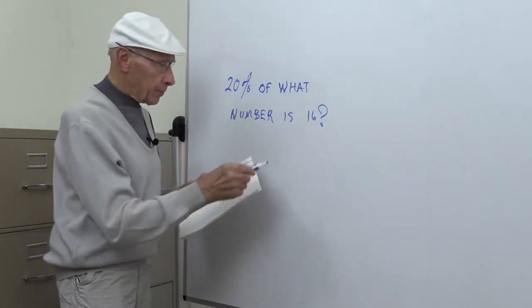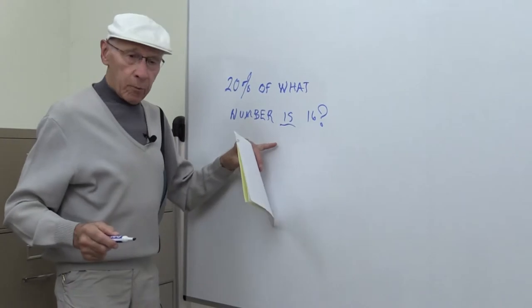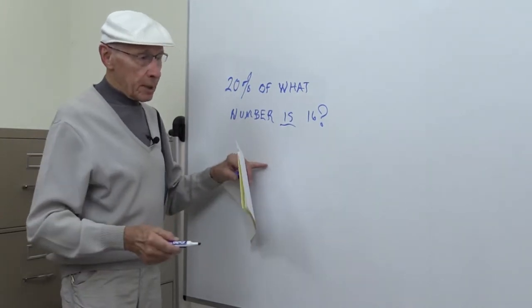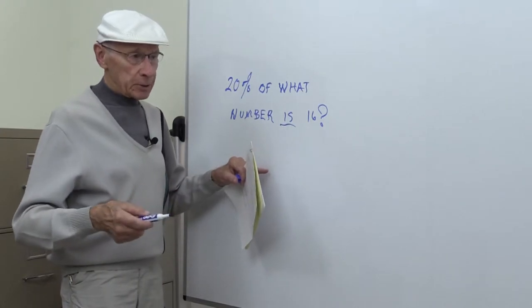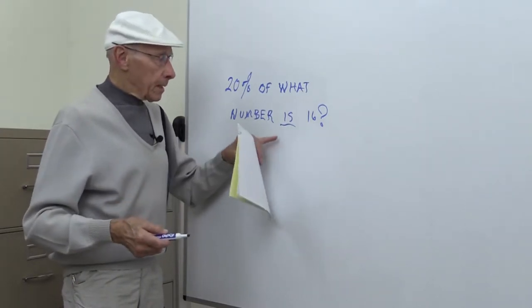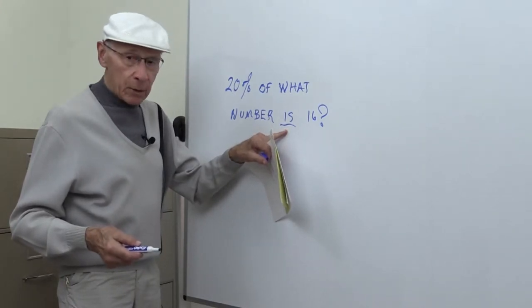The key word here is 'is'. There are a number of keywords which we have a list of - keywords for addition, multiplication, and division. And 'is' is one of those keywords that means equal.